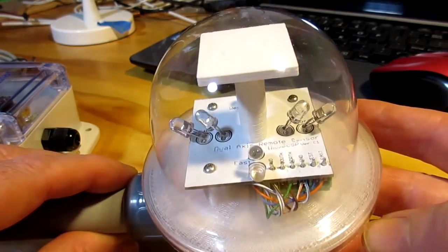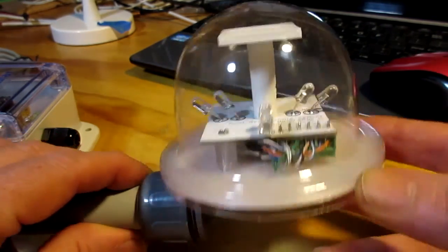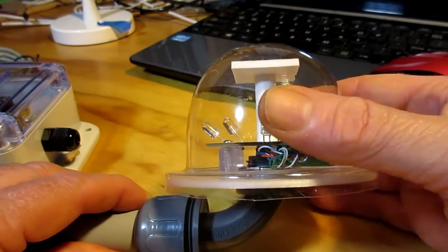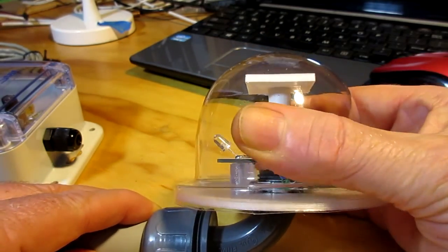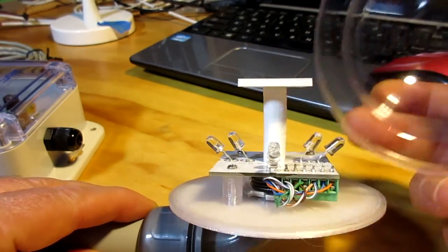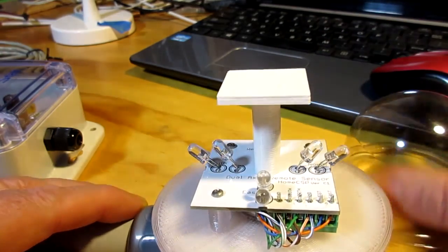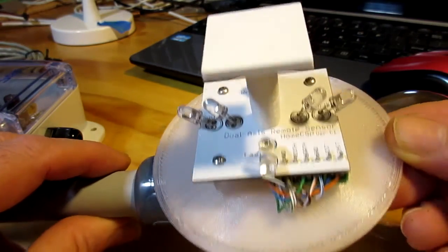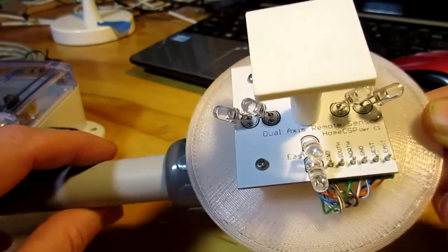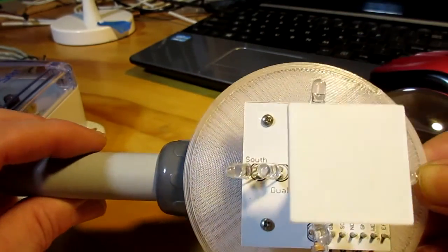Let's take a close look at the remote sensor here. This one hasn't been sealed with silicon adhesive yet. I can pop the vacuum form dome off.